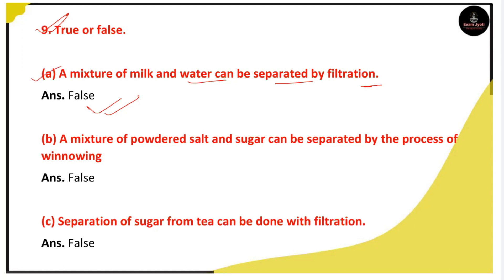Next, statement B number 2: A mixture of powder, salt, and sugar can be separated by the process of winnowing.